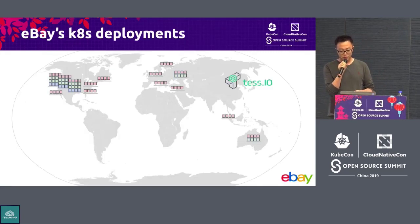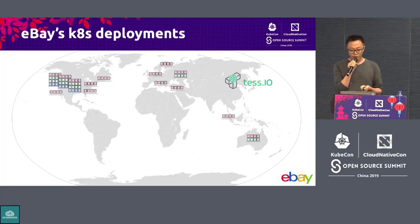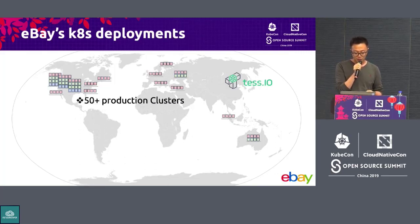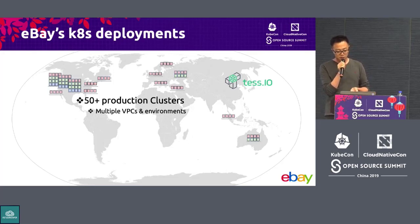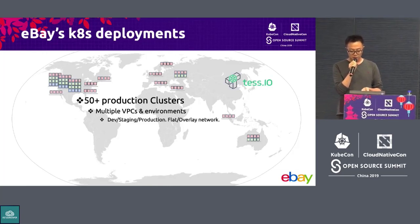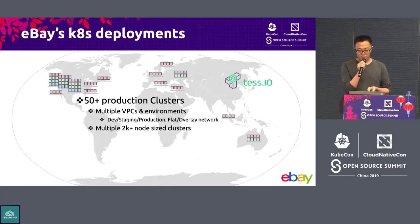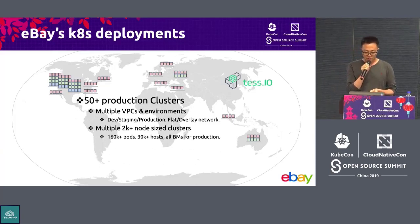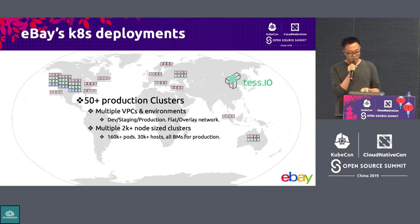eBay is one of the earlier adopters of Kubernetes. We run an internal distribution called tess.io. Within the past few years, we've moved massive production workloads into containers running on Kubernetes. As of now, we have 50-plus production clusters. We run multiple VPCs for different environments. We have both flat network and overlay network based on OVN. We have multiple 2,000-plus sized clusters with heavy production workloads. We have roughly 160,000 pods running on about 30,000 hosts.